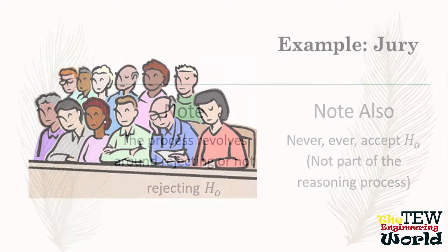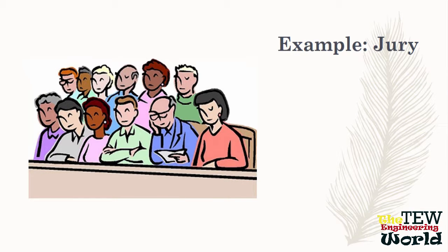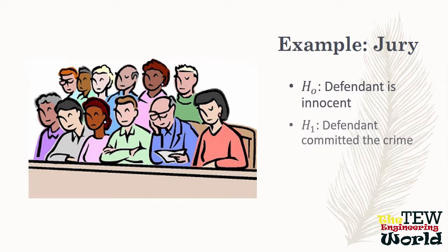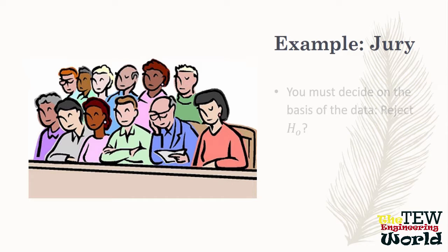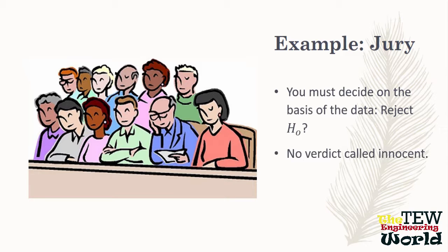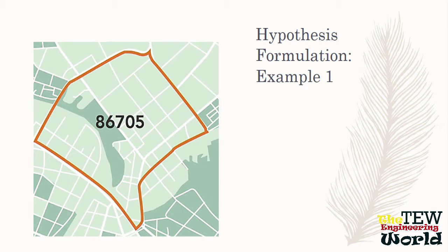A jury is a good example of this. In our legal system, the null hypothesis is that the defendant is innocent. The alternative hypothesis is that the defendant committed the crime. Think of testimony and evidence as data. The jury has to decide on the basis of the data: do we reject the null hypothesis? Notice that there is no verdict called innocent — a verdict of innocent would amount to accepting the null hypothesis.